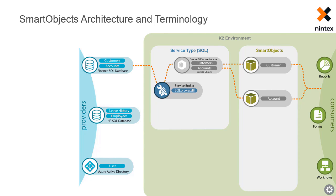Because we want to connect to a SQL Server database, we need to create a service instance of the SQL service broker and configure the service instance to point to the finance SQL database. Registering this service instance will discover the available tables, views, and stored procedures in the target database, and generate service objects for those artifacts. Then we can either auto-generate smart objects off of the discovered service objects, or manually create smart objects using K2 design tools and point these smart objects to the service object methods we want to expose. In this case, we created customer and account smart objects that each point to a table of the same name in the finance SQL database.